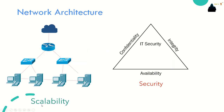Our network should also be scalable. A scalable network can expand quickly to support new users and applications without impacting the performance of services being delivered to existing users. If you want to add any new user, new company, or new devices to your system, it should not cause any problems. Our network should also be secure, ensuring confidentiality, availability, and integrity.